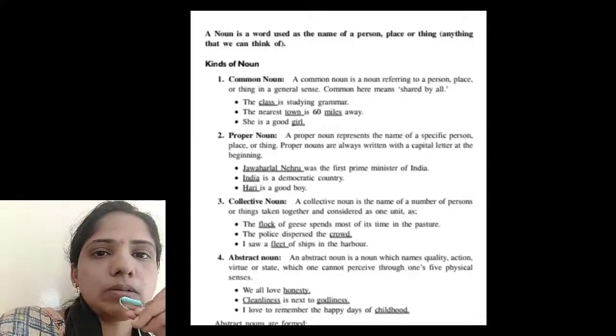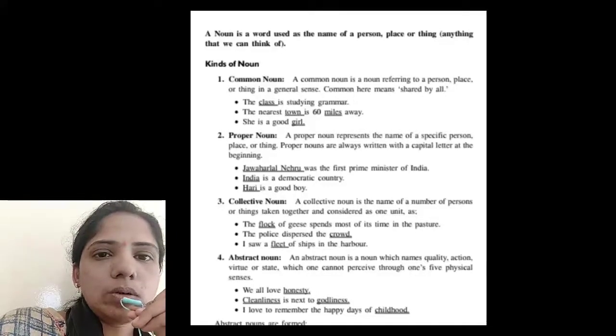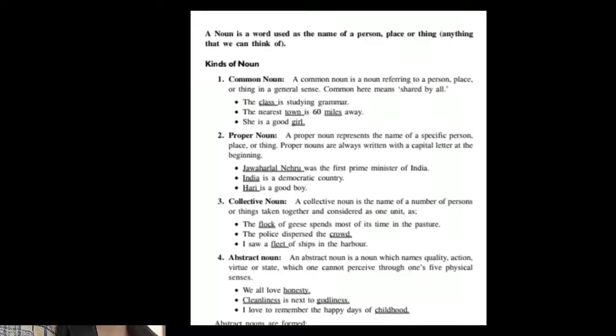Abstract noun. An abstract noun is a noun which names quality, action, virtue or state, which one cannot perceive through one's five physical senses. For example, we all love honesty.